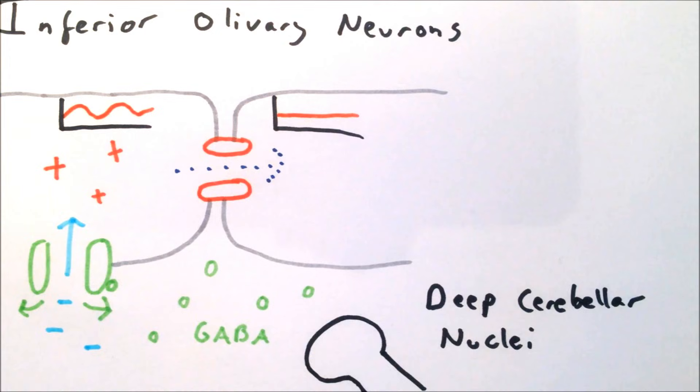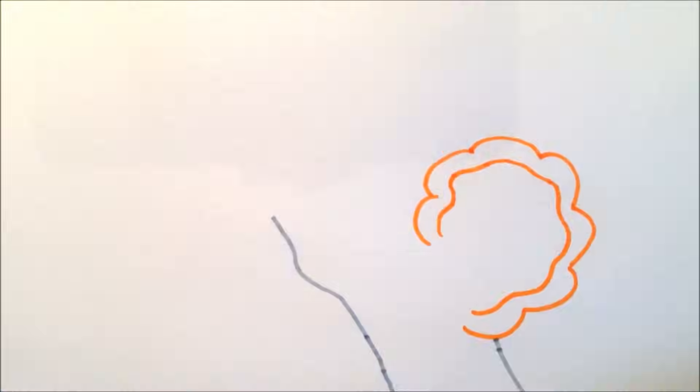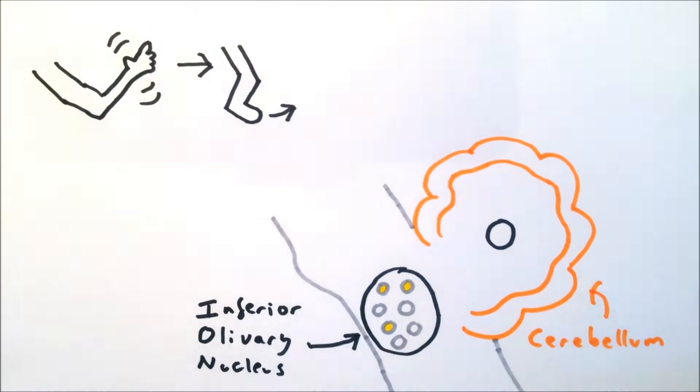This enables the cerebellum to reconfigure the inferior olivary neuron assembly into different patterns.